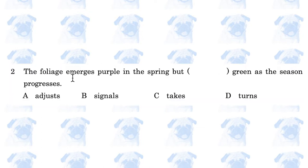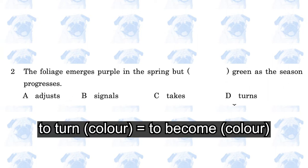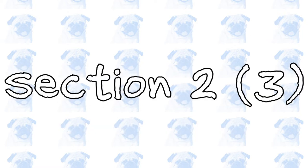The foliage emerges purple in the spring, but blank green as the season progresses. The answer is: turns green. The verb to turn, followed by a colour, means that something changes into that colour. So turn green means to become green.